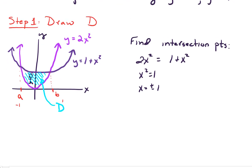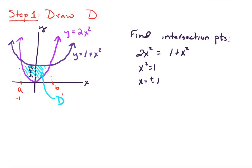All right, so let's summarize what we have. Region D is the region where X is bounded between negative 1 and 1. And our Y values go between these two functions. And the lower bound for this is 2X squared, and then the upper bound is the 1 plus X squared. So that's our region D.